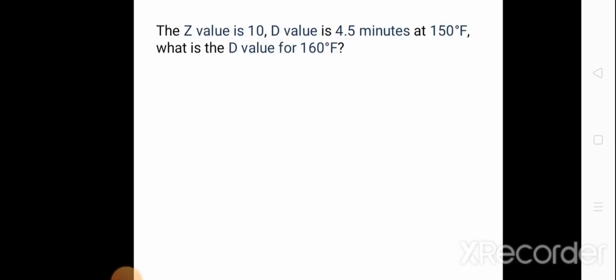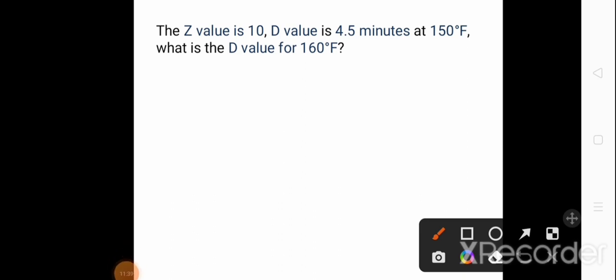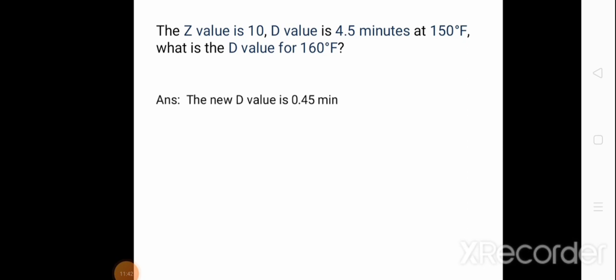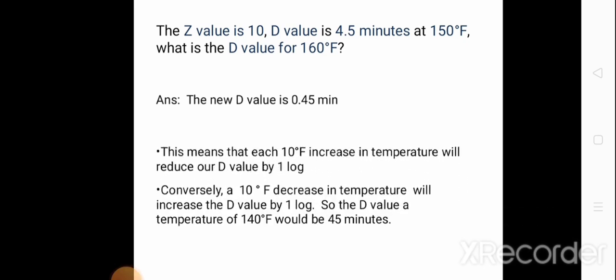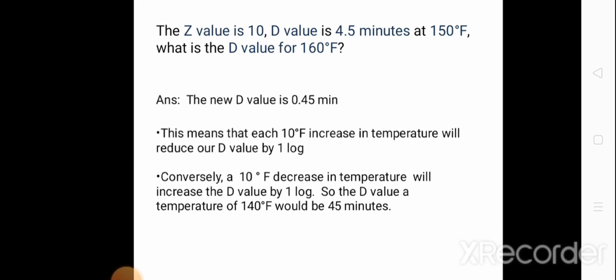Another example: the Z value is 10 degrees Fahrenheit and D value is 4.5 minutes at 150 degrees Fahrenheit. What is the D value at 160 degrees Fahrenheit? The new D value is 0.45 minute, since each 10-degree Fahrenheit increase in temperature reduces the D value by 1 log. Conversely, a 10-degree Fahrenheit decrease in temperature increases the D value by 1 log, so the D value at 140 degrees Fahrenheit would be 4.5 × 10 = 45 minutes.